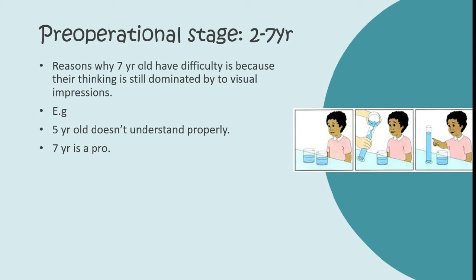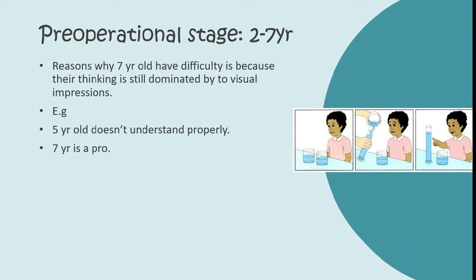One reason younger children under seven have difficulty understanding conservation of mass is that their thinking is dominated by visual impressions. A change in the appearance of a clay mass means more to them than less obvious qualities such as weight.